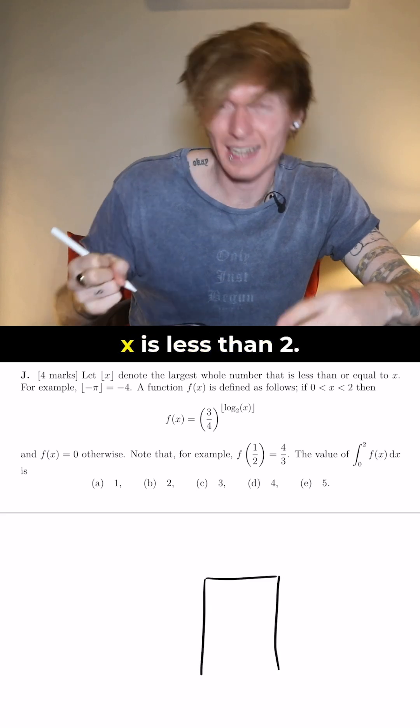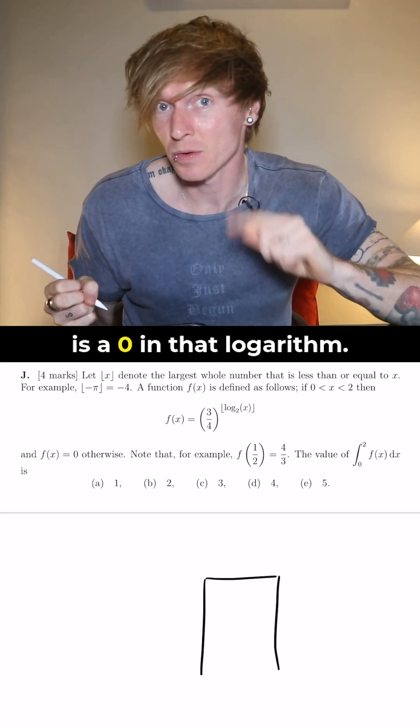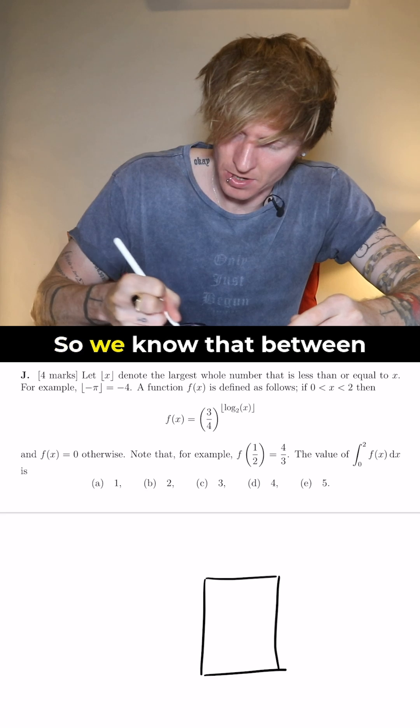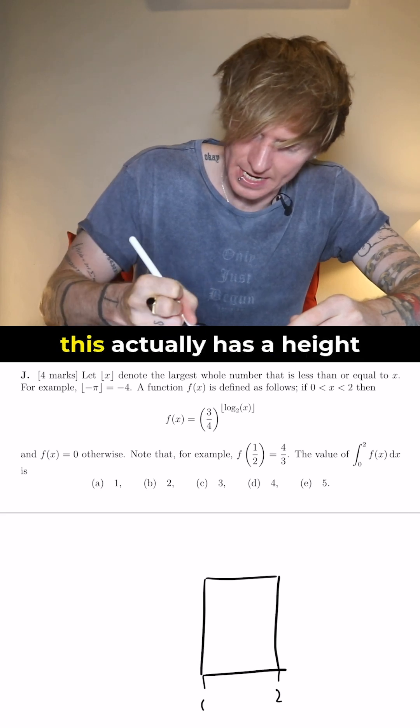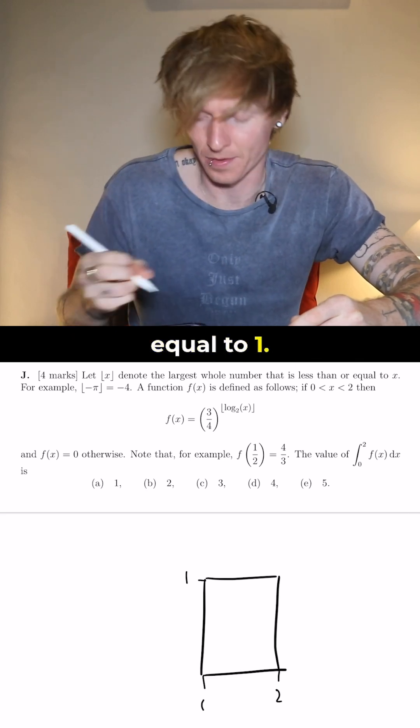So the first one, x is less than 2, so we're going to get a zero in that logarithm. We know that between 2 and 1 this actually has a height equal to 1.